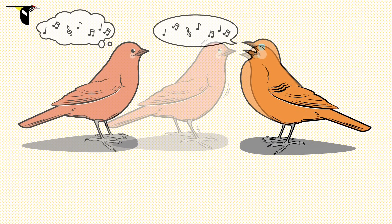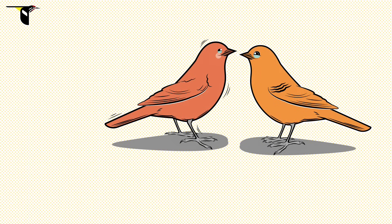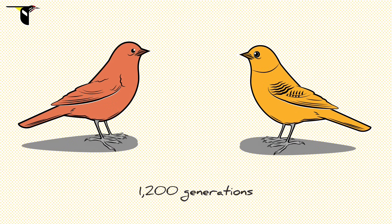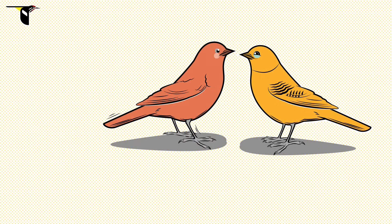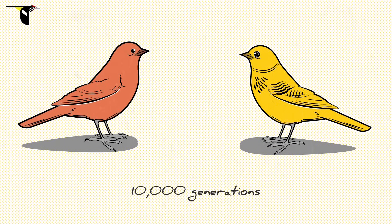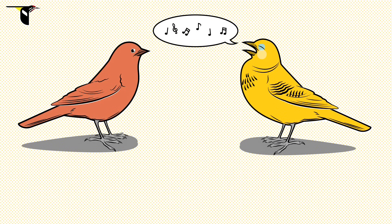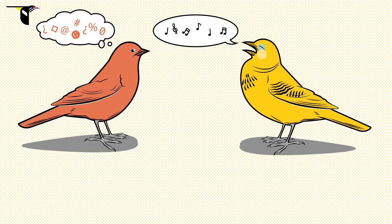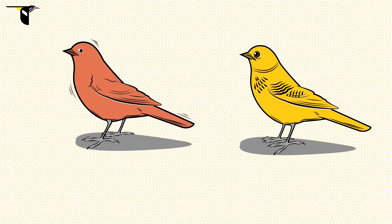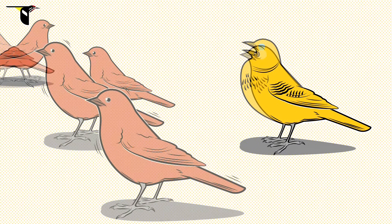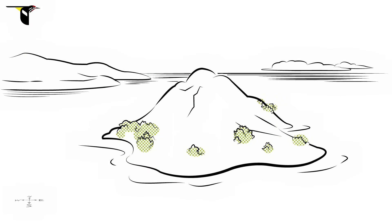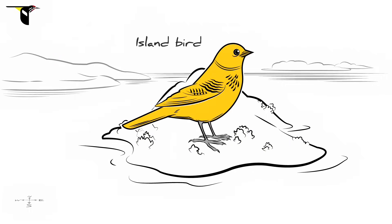It appears that these two still recognize each other as members of the same species. How about after another 1,000 generations of isolation? Now the female finds this island male's song a bit strange, but she still chooses to mate with him. What if we fast-forward again to 10,000 generations of isolation? This time, the female doesn't even recognize the male's song and is completely uninterested. If this female's mating preferences are widespread in the population, we now have two bonafide species: mainland and island.